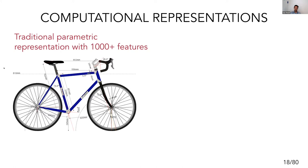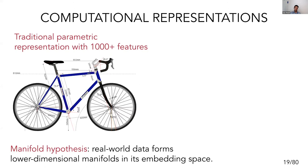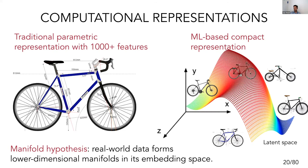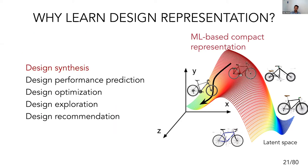Traditionally, parametric design has been used a lot. For bikes, for instance, there are thousands of dimensions which can represent a bike. But when you look at bikes in general, they do not vary on a thousand parameters — they look pretty similar. This is where the manifold hypothesis comes into picture: many real-world data form a lower-dimensional manifold in their embedding space. A lot of machine learning methods essentially try to find these manifolds where all the bikes lie, so that two items which are close to each other are essentially similar. If we can learn these low-dimensional spaces, we can do many downstream tasks — generate new bicycles, do performance prediction, optimization, or even recommend new products to people.